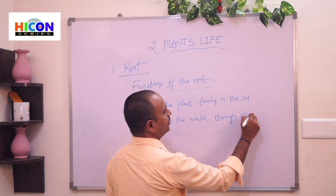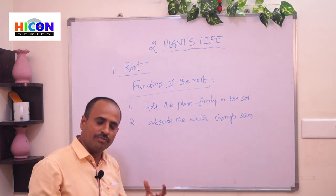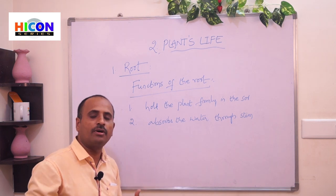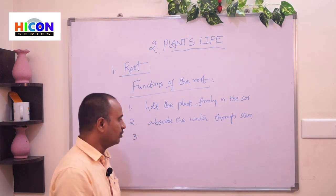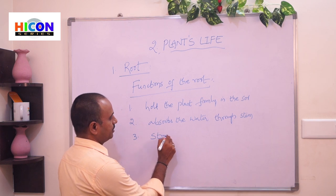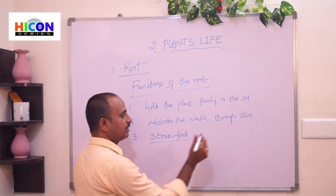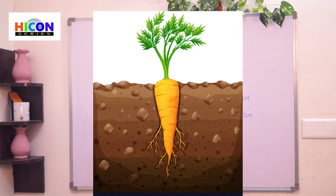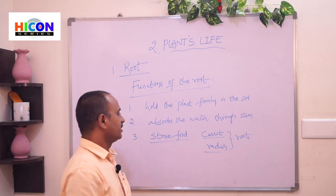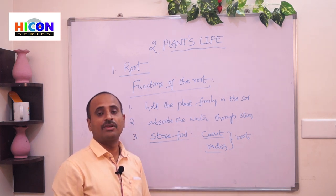The roots absorb water from the soil and supply it through all parts of the plant via the stem. The third function is that some roots store food. In some plants, roots store food — examples are carrot and radish. These roots are very thick because they store food.